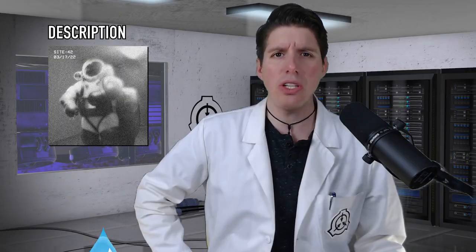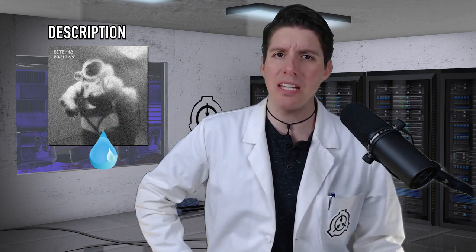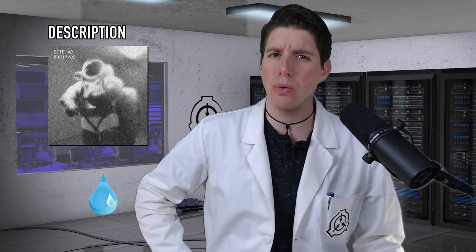Description. SCP-5826 is a slightly damaged newt suit, a type of atmospheric diving suit, yellow in coloration. Upon physical interaction with liquid substances, SCP-5826 will become intangible, but only towards the liquid substances.